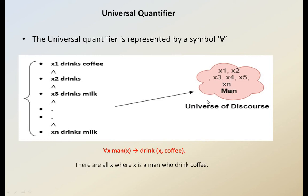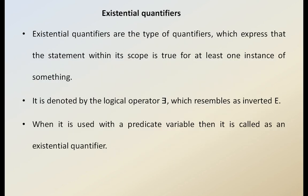So, in the set X1, X2, X3, X4, X5 to Xn as the universe of discourse — we can conclude: for all X, man(X) implies drinks(X, coffee). There are all X where X is a man who drinks coffee. Like this, 'for all' is called the universal quantifier. It is applicable to all — whatever quantity you are representing, it is applicable universally.